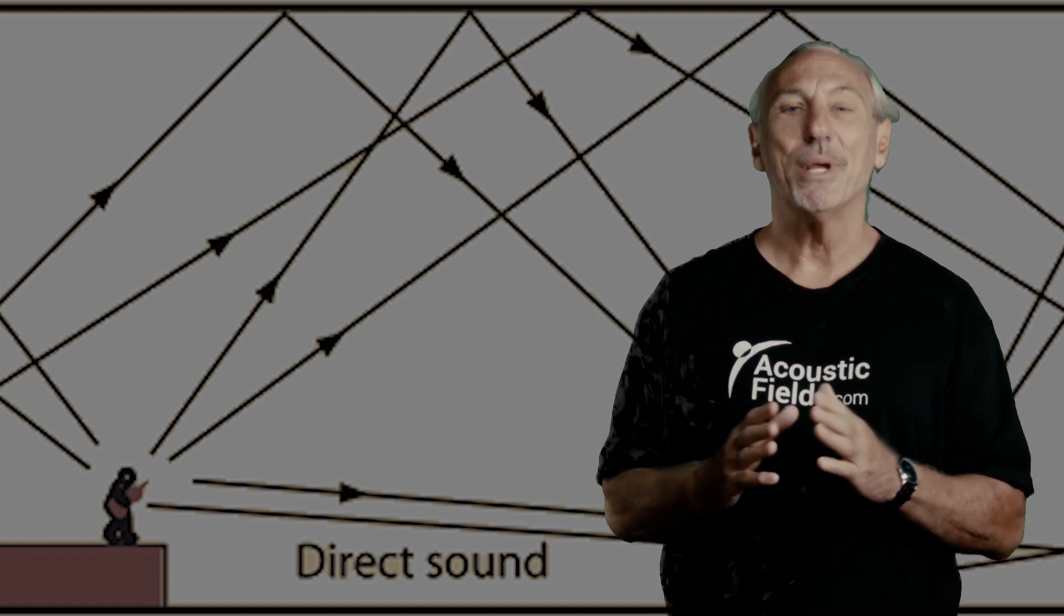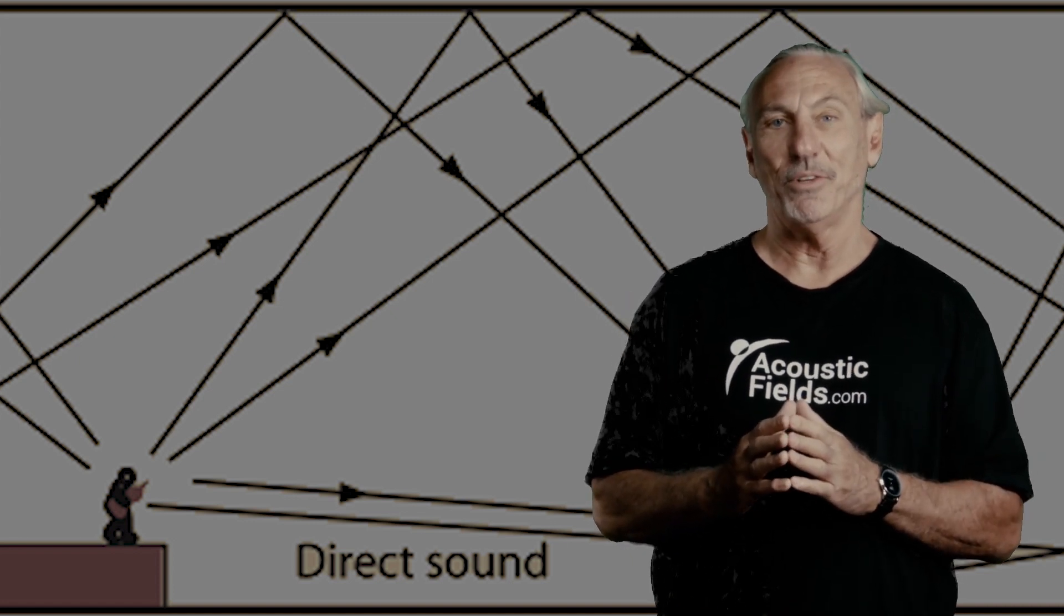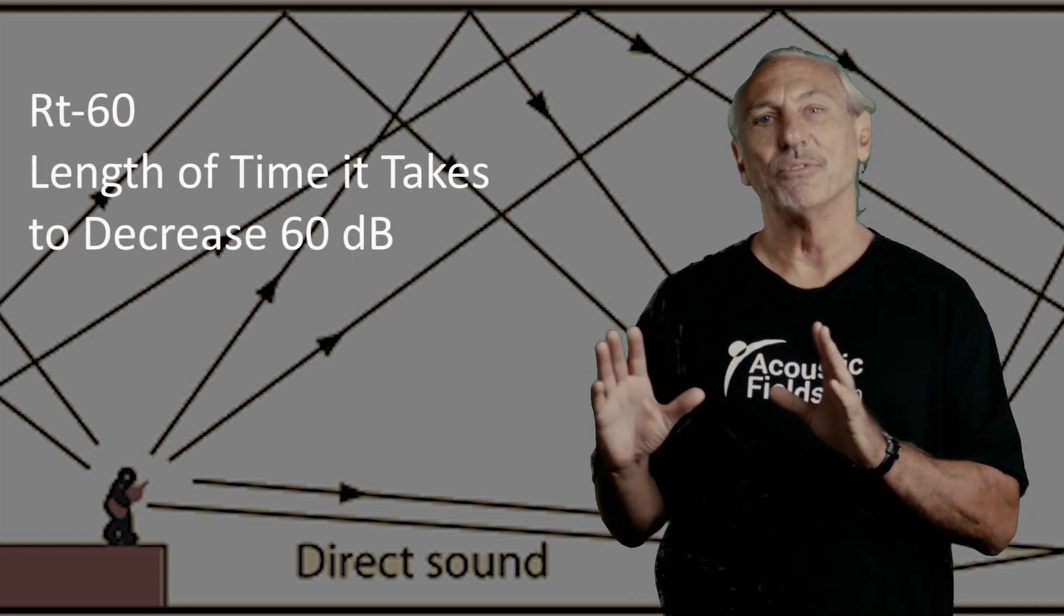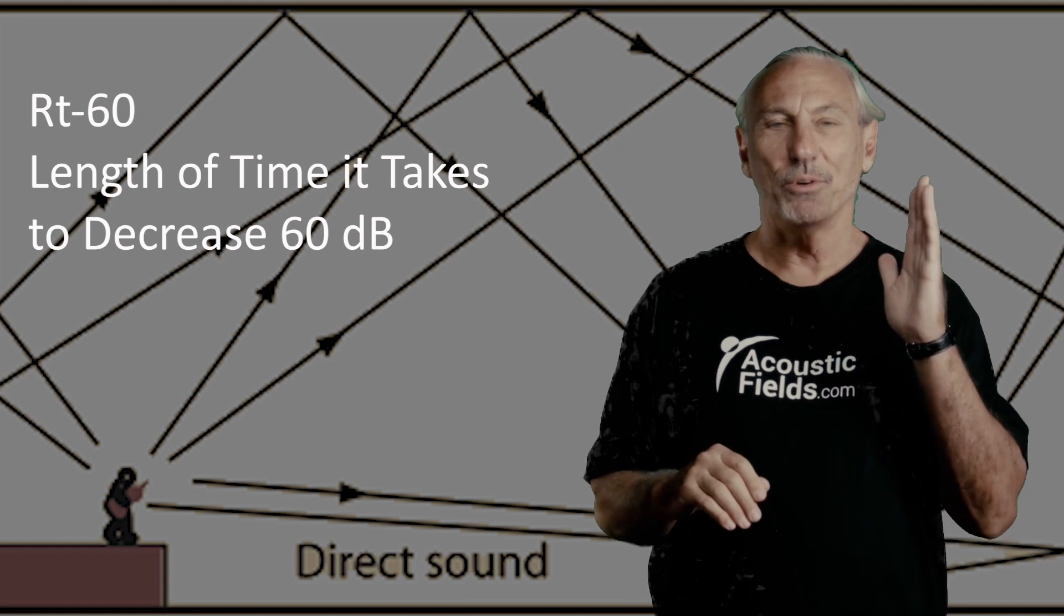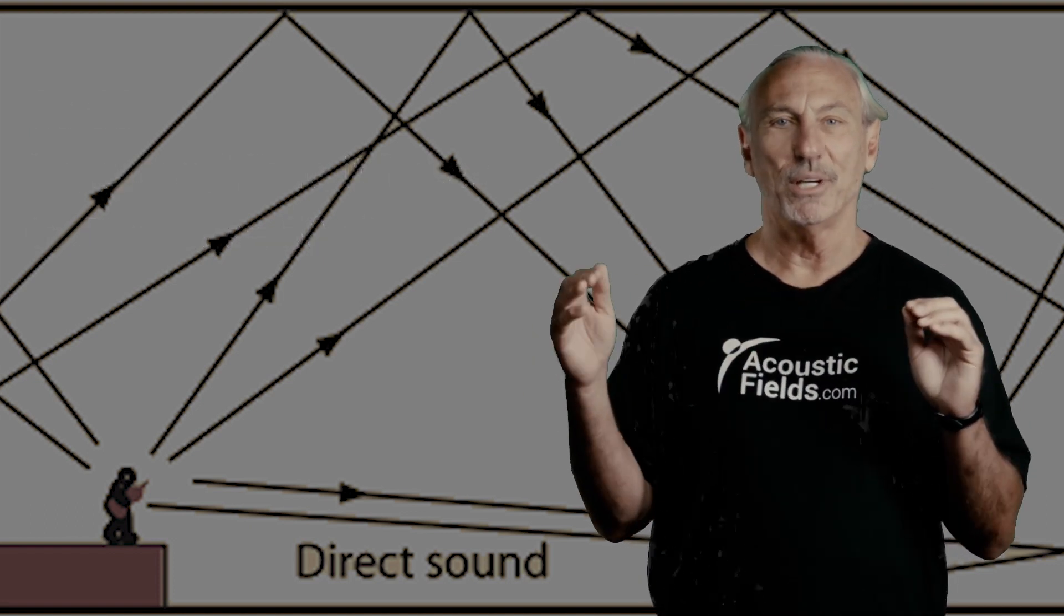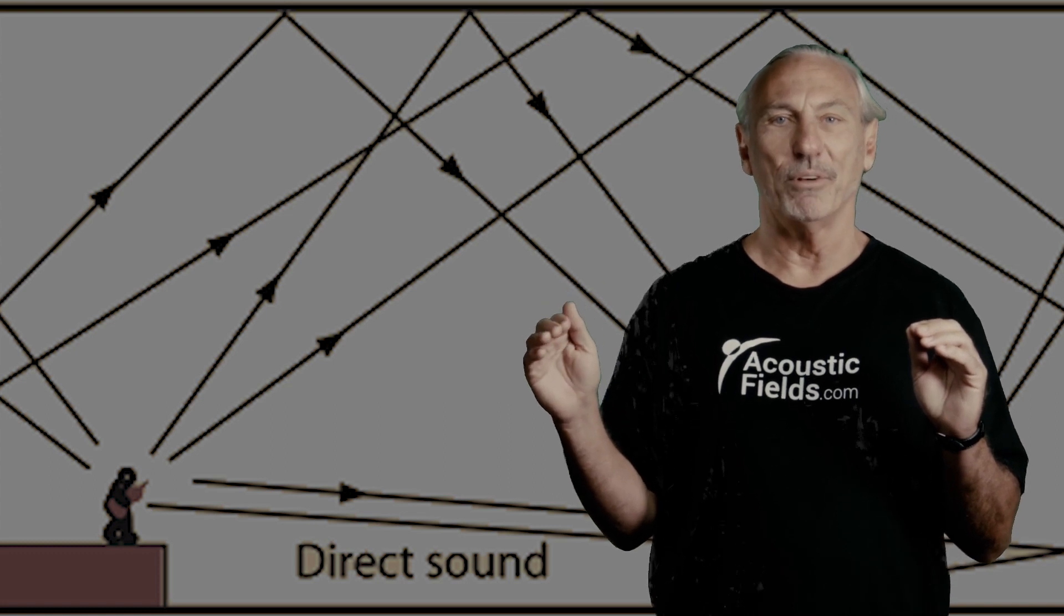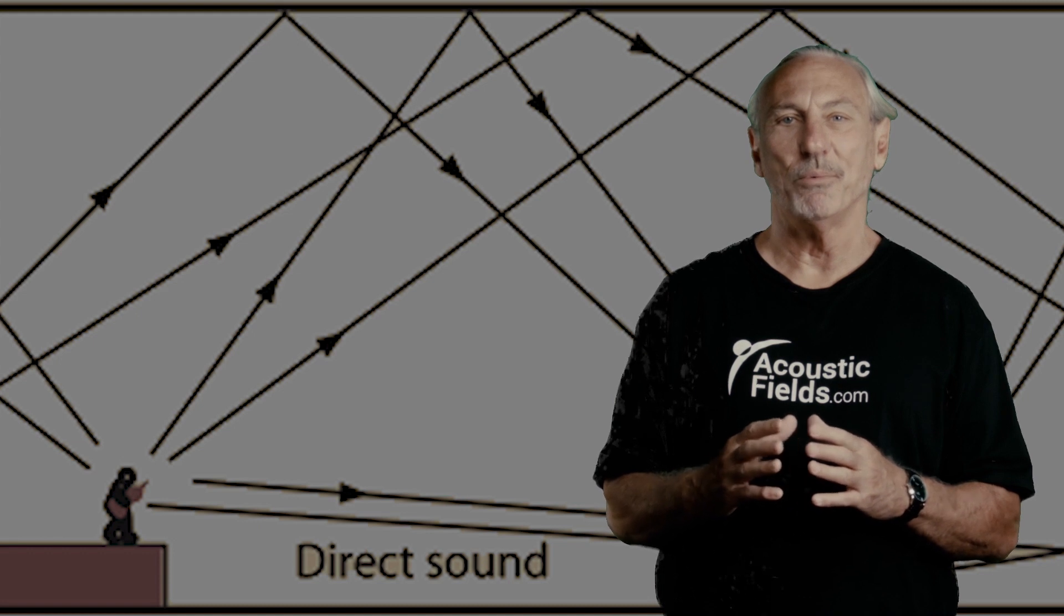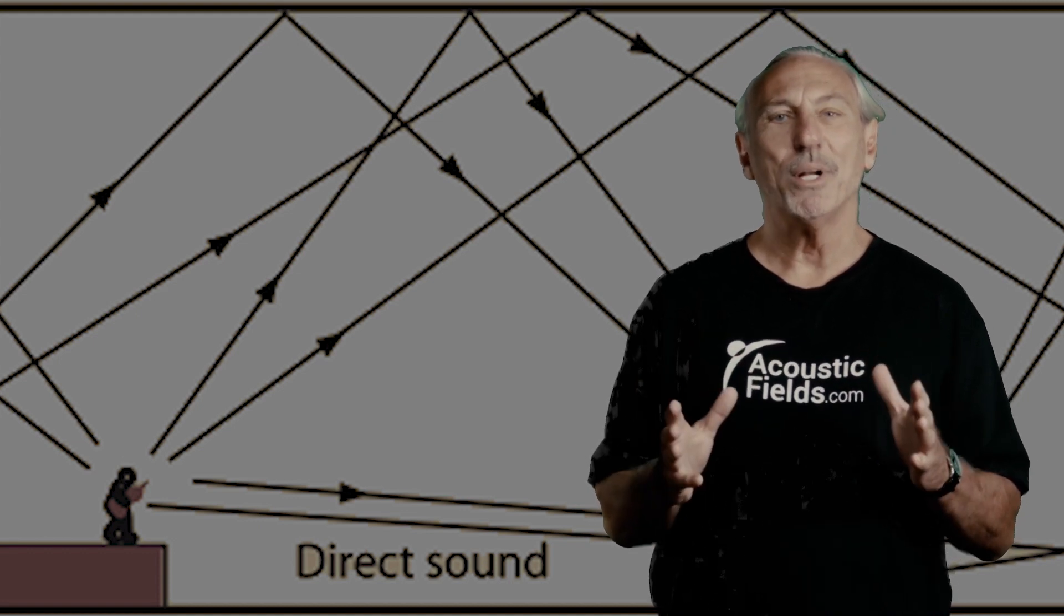We know we have a measurement for that in physics. It's called RT60. It's a calculation. The 60 stands for the length of time it takes for the source sound to decay down to a certain point, a certain level. So it's the persistence of sound in a room that we're focused on.